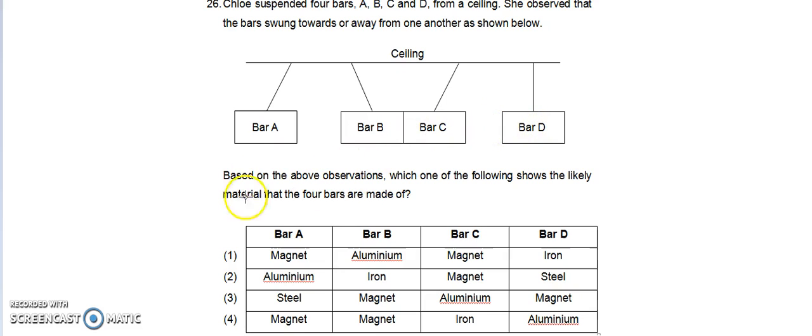So let's take a look at the options. Bar A magnet, bar B aluminum. Okay, this option is definitely out.